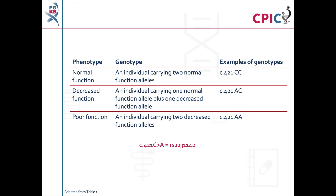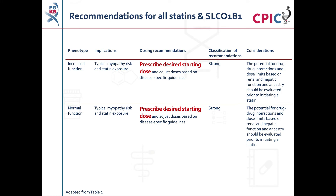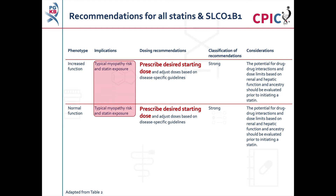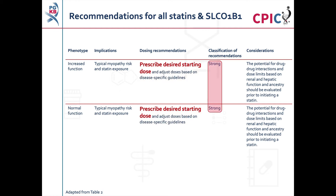The CPIC recommendations for SLC01B1 decreased function, possible decreased function, and poor function patients differ by drug. However, the recommendations for increased function and normal function patients are the same for all statins. Patients with increased or normal function may have typical statin exposure and a typical risk of myopathy. These patients can be prescribed the desired starting dose of statin — this is a strong recommendation. The potential for drug-drug interactions and the effects of renal function, hepatic function, and ancestry should also be considered when prescribing statin.